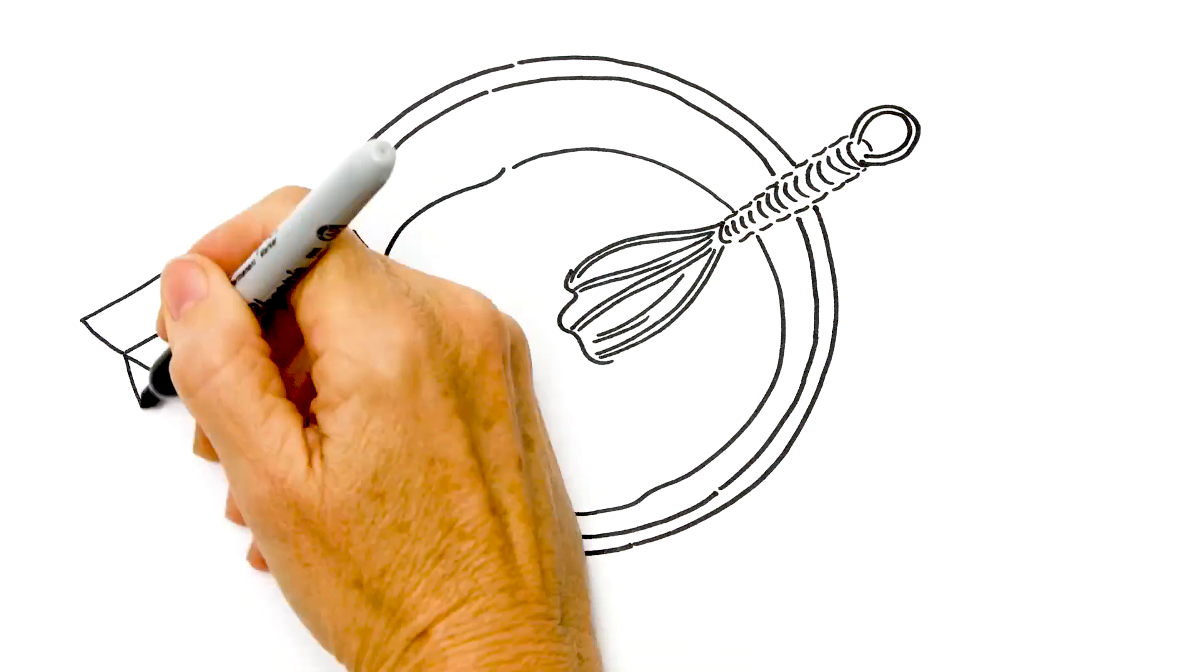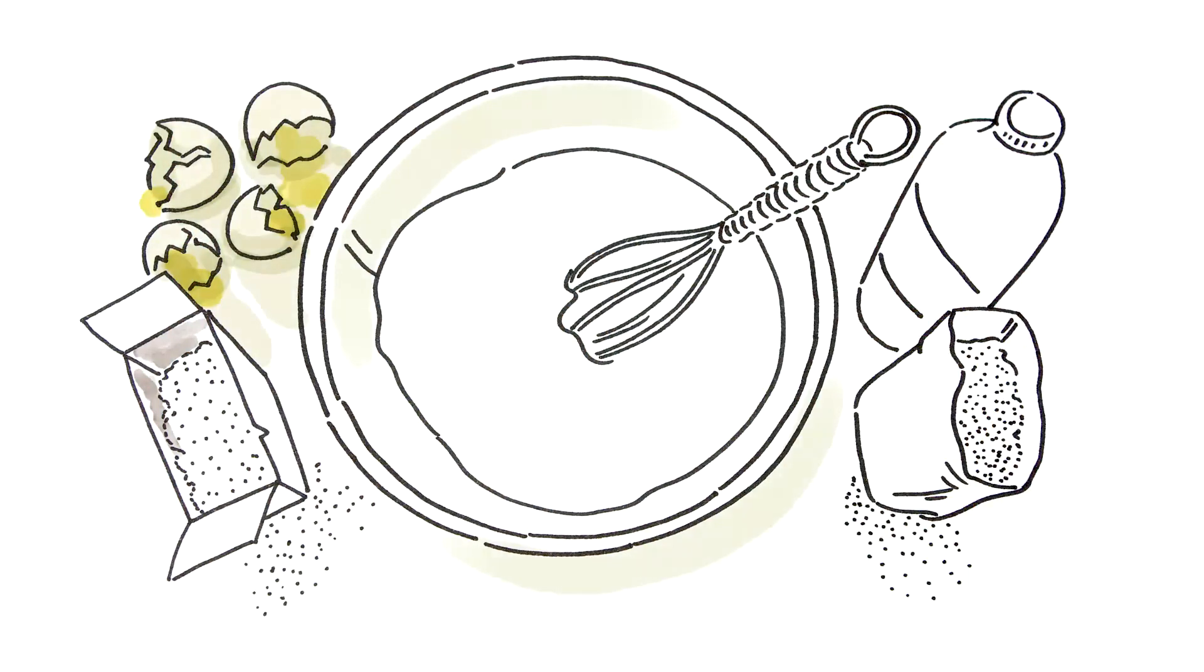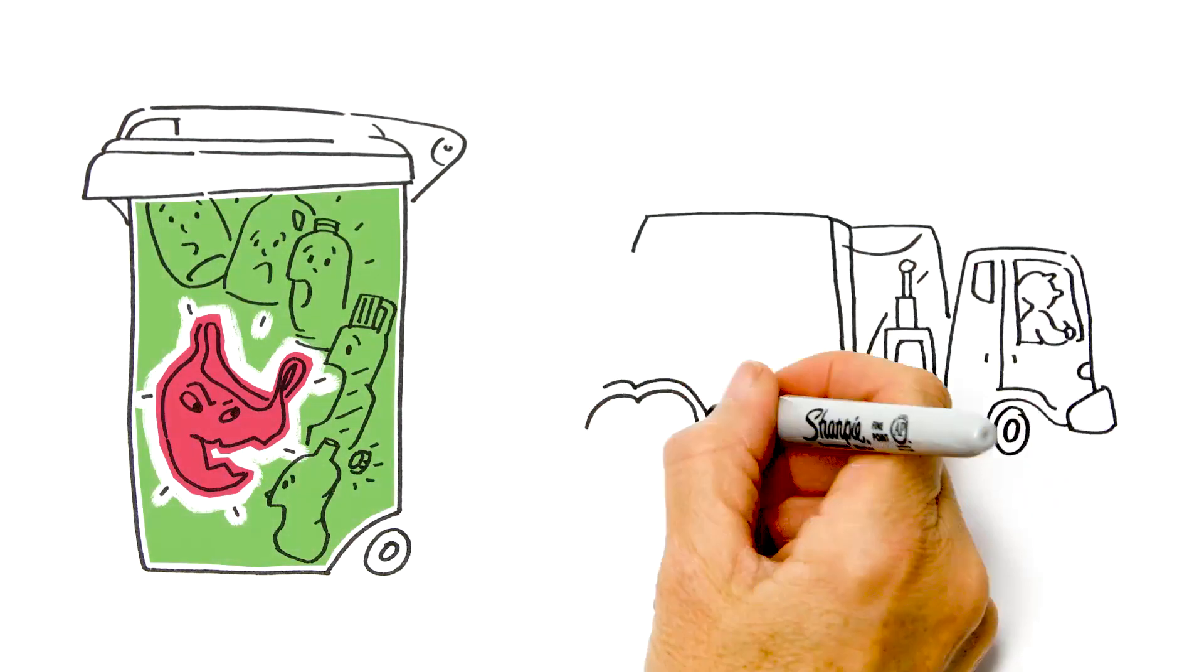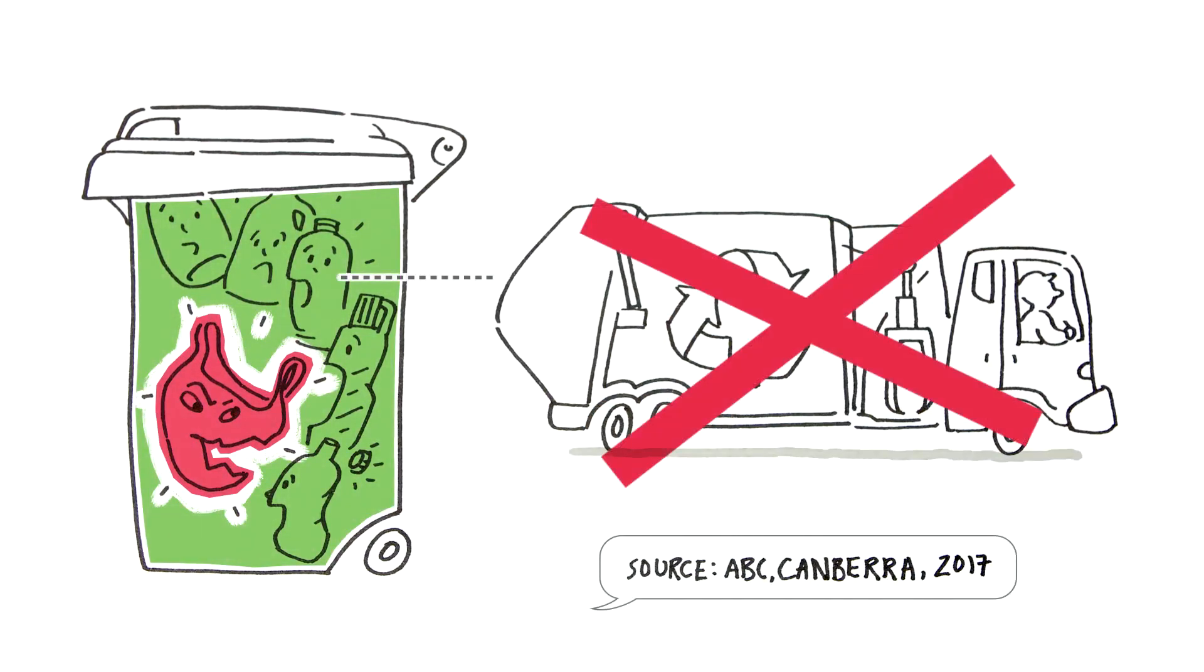It's like making a cake. Once you mix the flour, eggs and milk together it is virtually impossible to get back the raw ingredients you started with. And just one item in the wrong bin can ruin an entire truck worth of recycling.